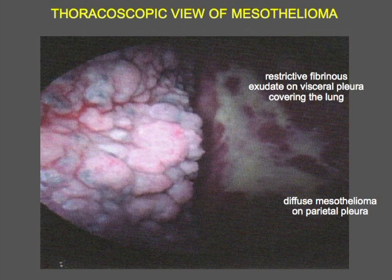This is a thoracoscopic view of mesothelioma that we're seeing on the screen at present. So in the foreground here, we're seeing this diffuse, lumpy tumor. And in the distance here, we can see the collapsed lung. And on its surface is some whitish material, which looks quite different from the tumor. This is simply this restrictive fibrinous exudate on the visceral pleura covering the surface of the lung, and that also restricts the movement of the lung.